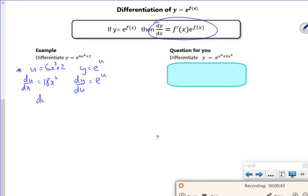So dy/dx is multiplying them together. So 18x². And then we've got to change the u back. So dy/dx is 18x² times by e to the original function.